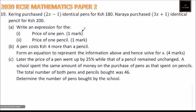This is question number 19, 2020 KCSE Mathematics Paper 2. Kering purchased 2x minus 1 identical pens for 180 shillings. Naraya purchased 3x plus 1 identical pencils for 200 shillings. Part A: write an expression for the price of one pen and price of one pencil.